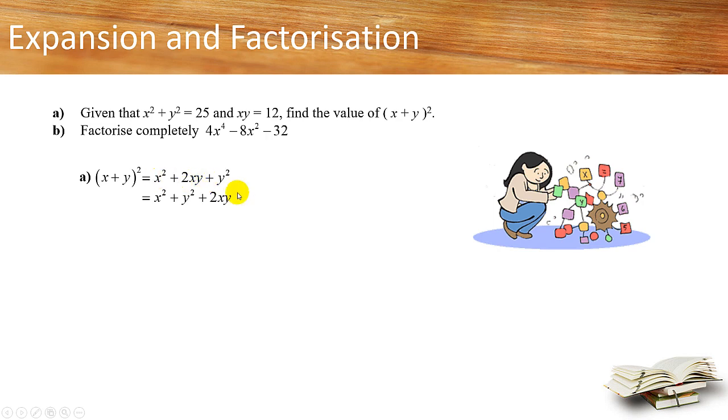The next thing is to regroup them. Let's put the x² + y² together and the 2xy behind. The reason why you want to put these two terms together is because we want to make use of this information. The question says that x² + y² is 25.